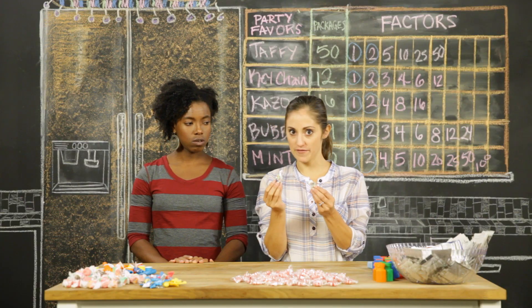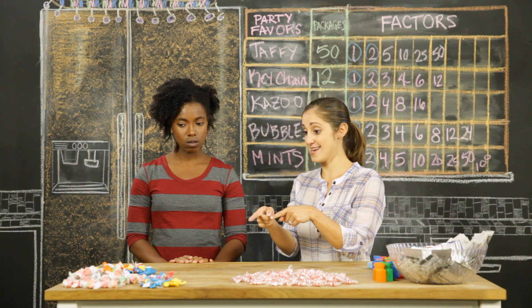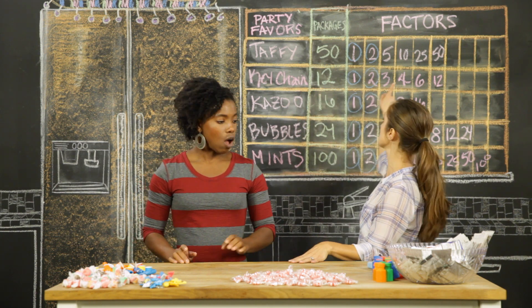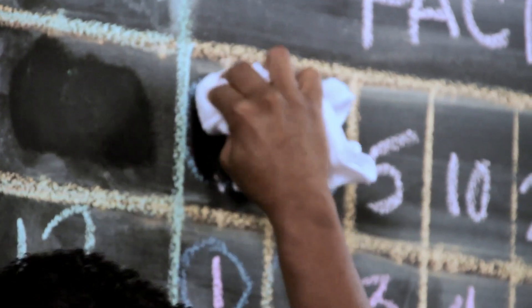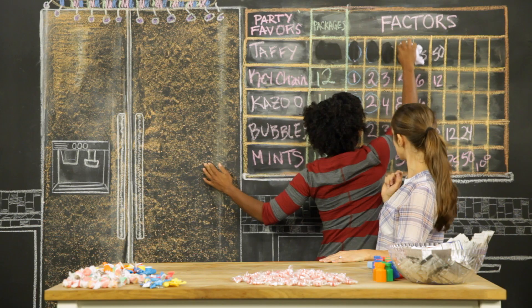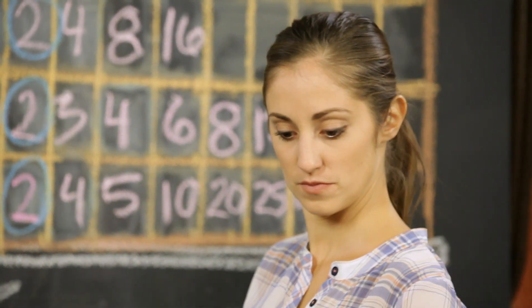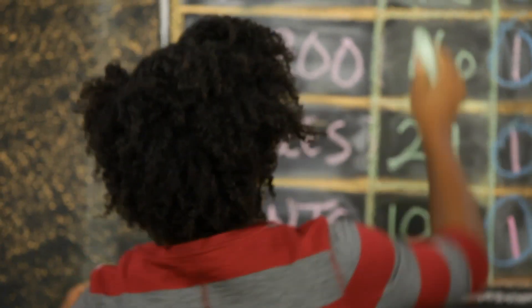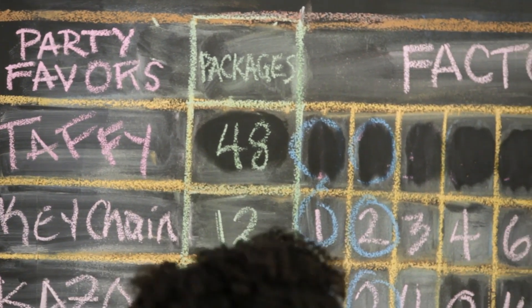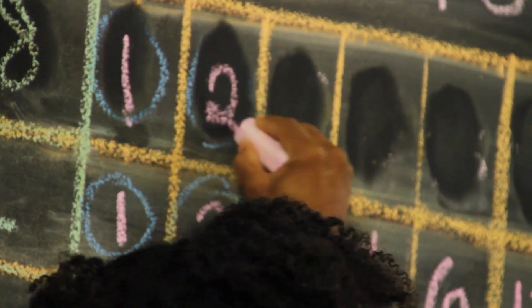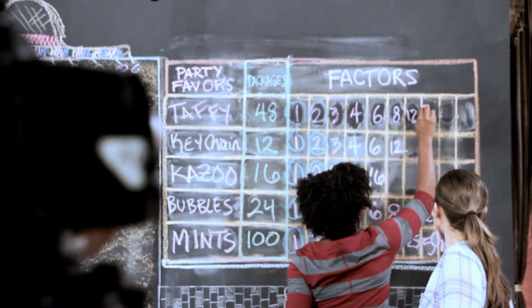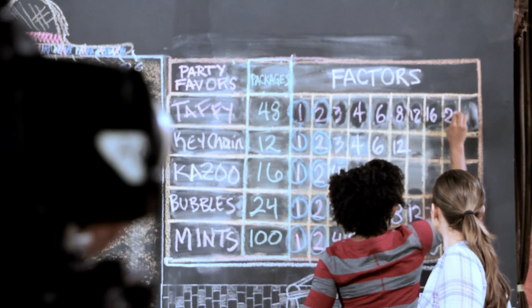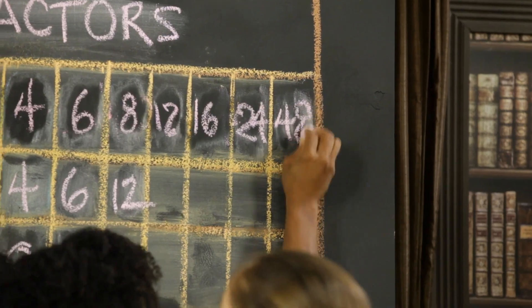Take two of the taffies away — that would leave 48. That'll change our first row of factors. So if we switch down to 48 taffies, the new factors would be: one, two, three, four, six, eight, 12, 16, 24, and 48. Wow, that really did make a difference — 48 has a lot of factors.